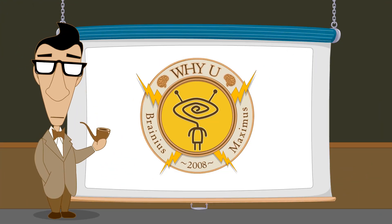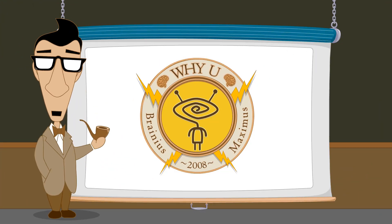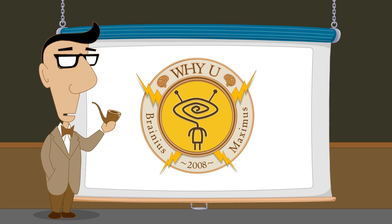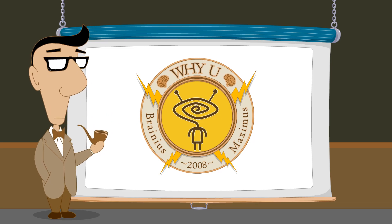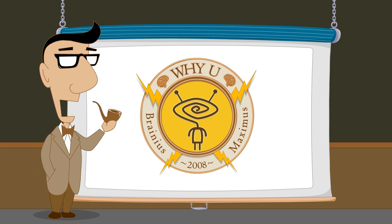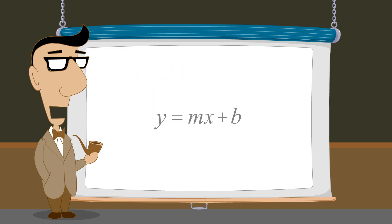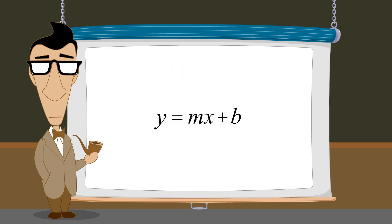Hello, I'm Professor Von Schmohawk and welcome to YU. So far, we have studied linear equations of the form y equals mx plus b. This form of the equation of a line is called the slope-intercept form.